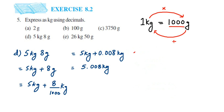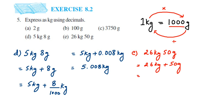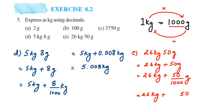The next question: 26 kg and 50 grams. This equals 26 kg plus 50 grams converted to kilograms. Converting 50 grams: 050 with three digits, place decimal three from the right gives 0.050 kg. Adding: 26 kg plus 0.050 kg equals 26.050 kg. I hope it's clear how to convert grams into kilograms. If you have any questions or doubts, drop a comment — thank you so much for watching.